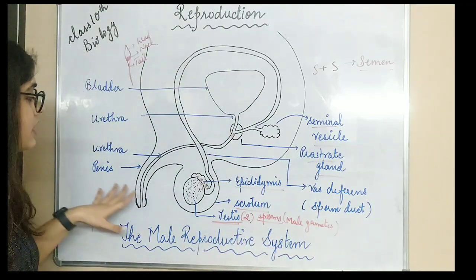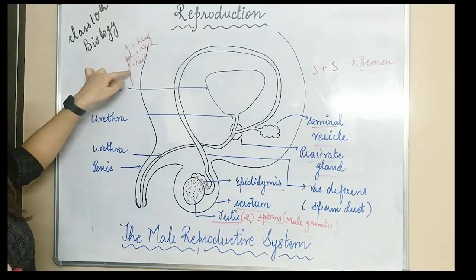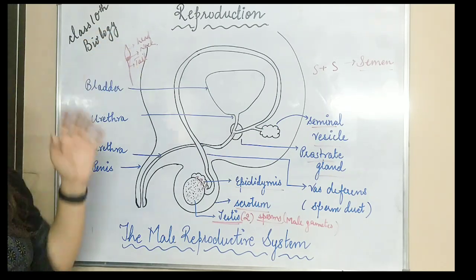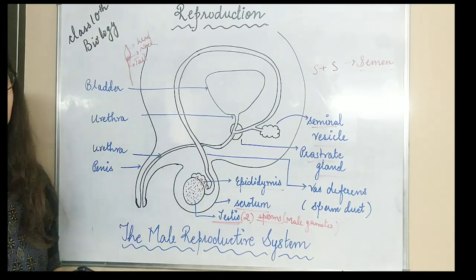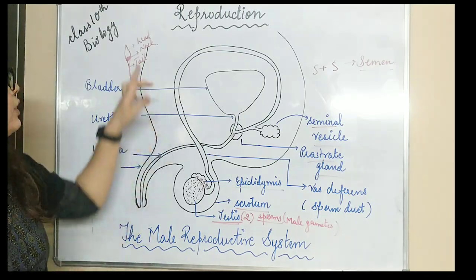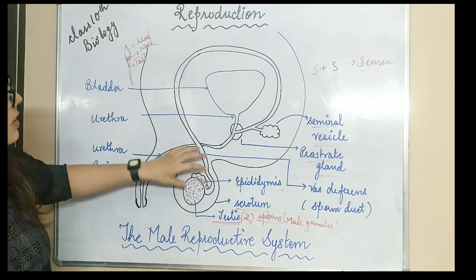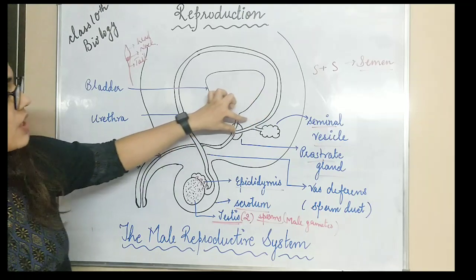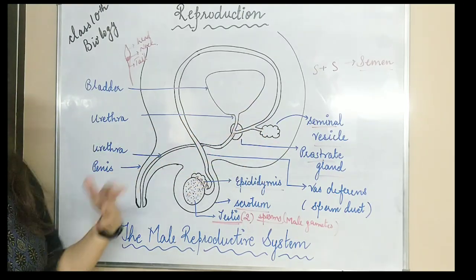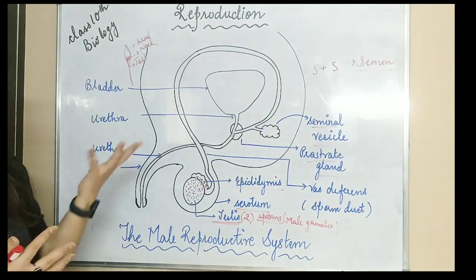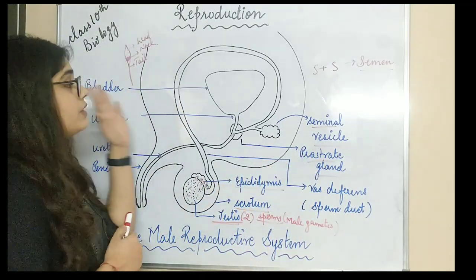So to recap: the sperm is divided into three parts — the head, neck, and tail. The head region is mainly used for fertilization with the egg. The neck region contains mitochondria to provide energy. The tail region is used for locomotion. After fusing with the secretions of the seminal vesicle and prostate gland, semen is formed — semen is the mixture of sperm and the secretions released by the seminal vesicle and prostate gland.